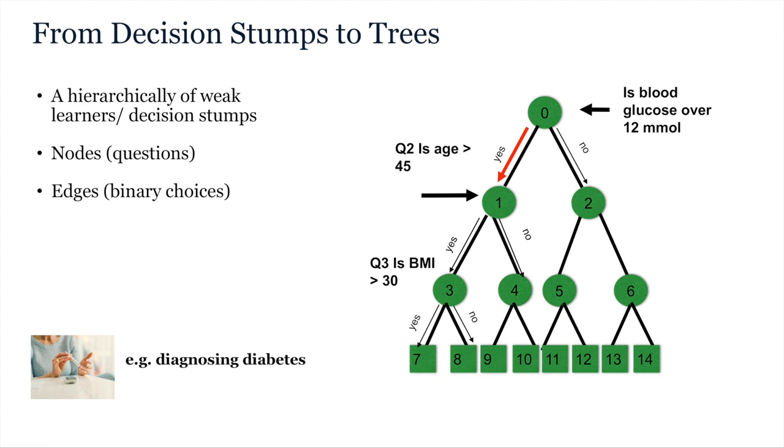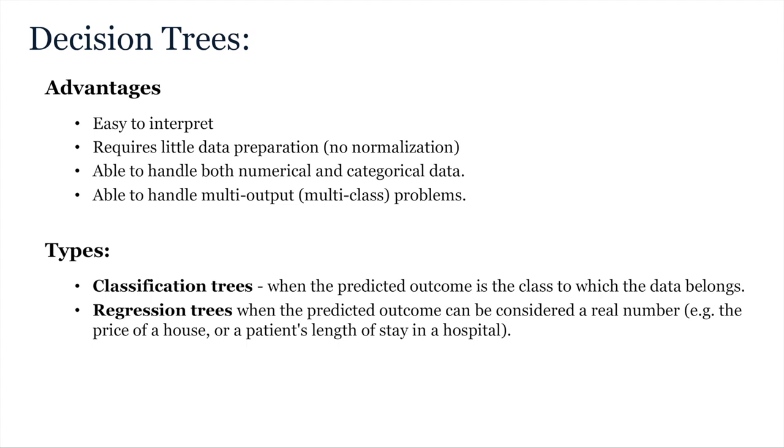This is just one path, however. A different example might have said no at the second node and no again at the third node. Perhaps here it would have received a different label, corresponding to diabetes type 1, because it started at a younger age. Equally, a data point might have taken the no path right from the beginning, showing that blood glucose is not over 12 millimoles. Accordingly, perhaps it ends up in a leaf node which indicates the patient is healthy or has a different condition.